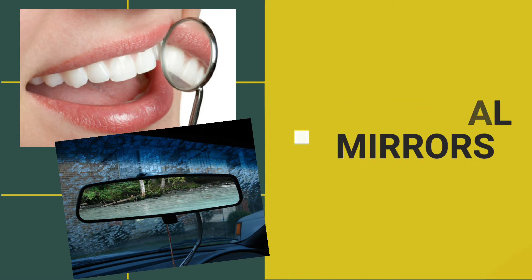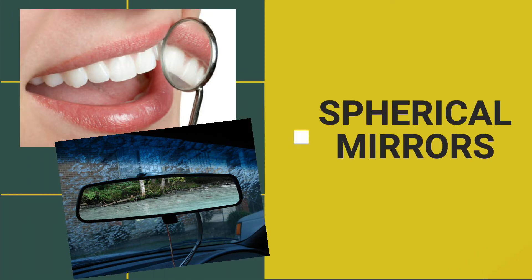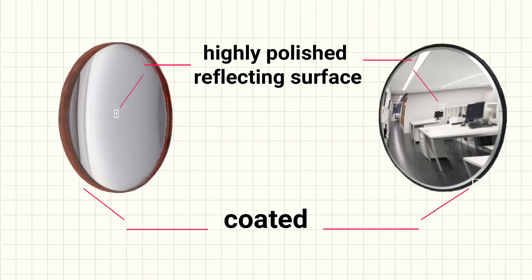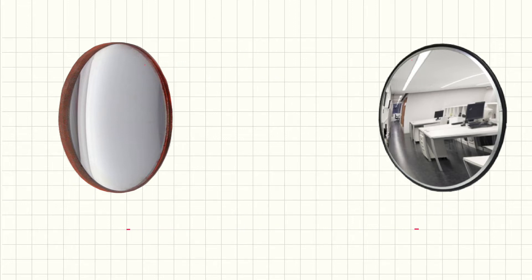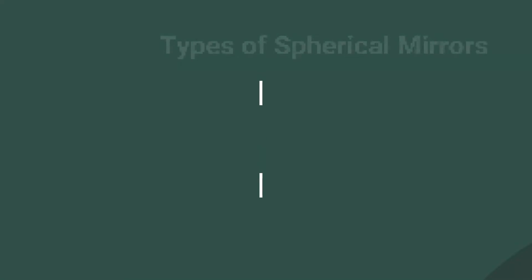Spherical mirrors are mirrors whose polished surface is part of a hollow sphere of glass or plastic. In a spherical mirror, one of the two curved surfaces is coated with a thin layer of silver, followed by a coating of red lead oxide paint. Thus, one side of the spherical mirror is opaque, and the other side is a highly polished reflecting surface. There are two types of spherical mirrors: concave mirror and convex mirror.